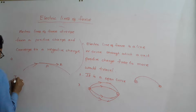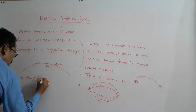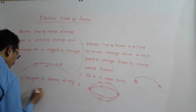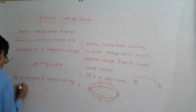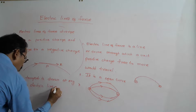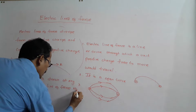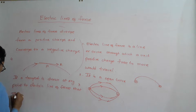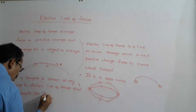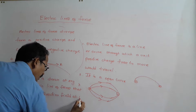If a tangent is drawn at any point to the electric line of force, that tangent represents the direction of the field at that point.